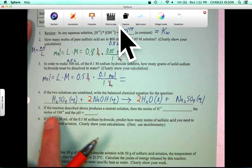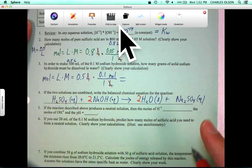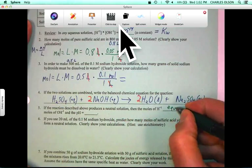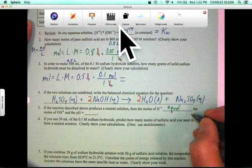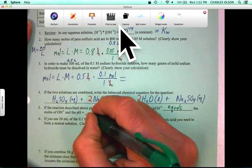So, if we neutralize, then the moles of H plus equals the moles of OH minus, and the pH is, of course, neutral, which is seven.